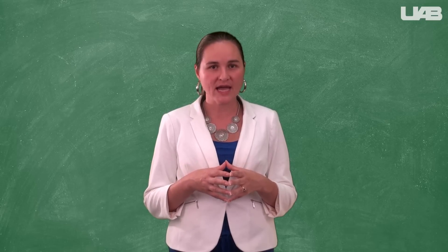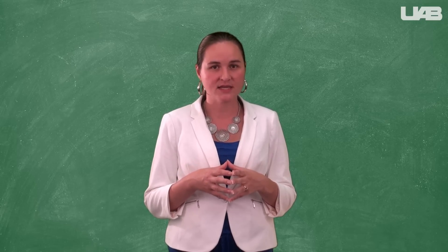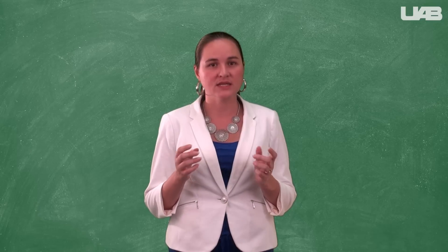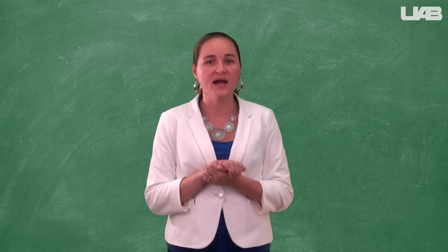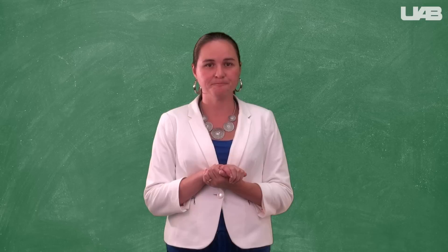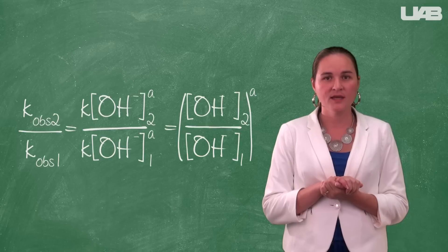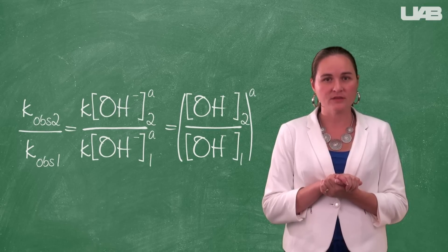To find the order of the reaction with respect to sodium hydroxide, we will take the kinetics data that you have already worked on, as well as the kinetics data that you collected when you performed the experiment with a higher concentration of sodium hydroxide. You will need to find the value of K observed for this second set of data. Then you can use this formula to find the order.